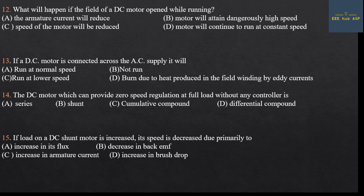Twelfth question: What will happen if the field of a DC motor is opened while running? Speed N is directly proportional to back EMF and inversely proportional to flux. If the field is removed, flux approaches zero, so speed becomes infinitely high. The motor will attain a dangerously high speed. Answer: Option B.